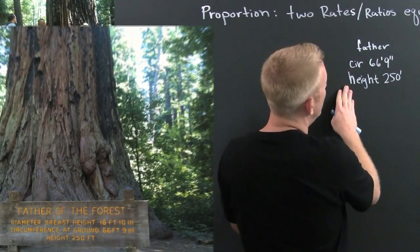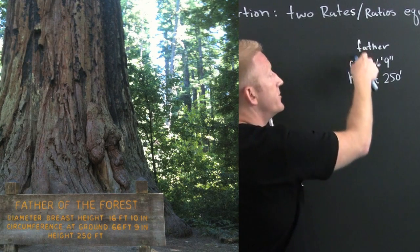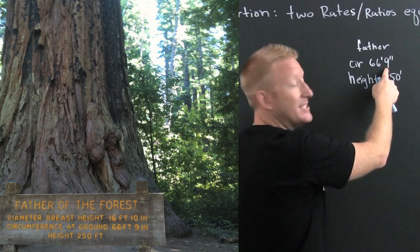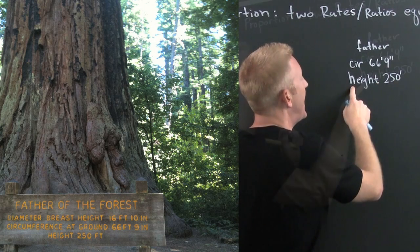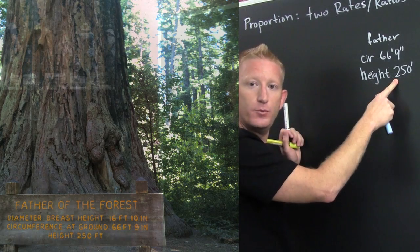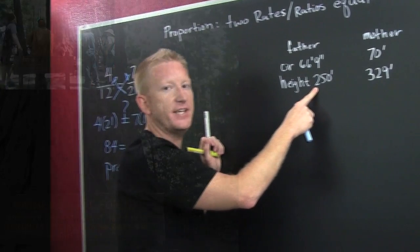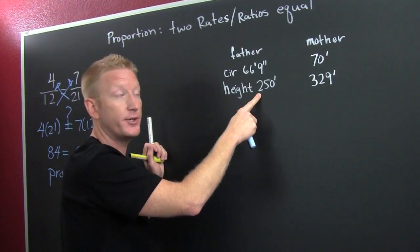And the sign said that the circumference of the father tree was 66 feet and 9 inches, whereas the height of the father tree was 250 feet. Tall, tall redwood tree. I would name it Clifford. Clifford the big redwood.